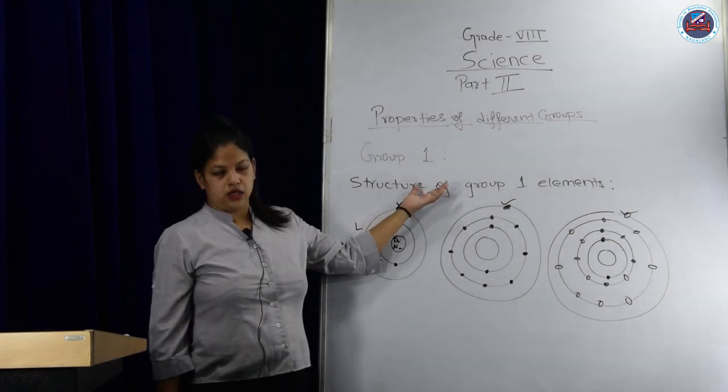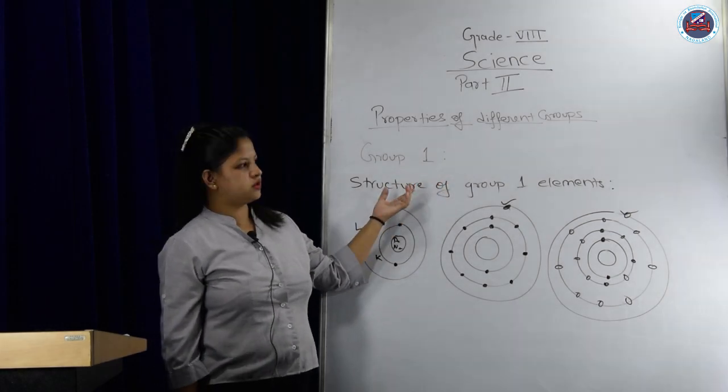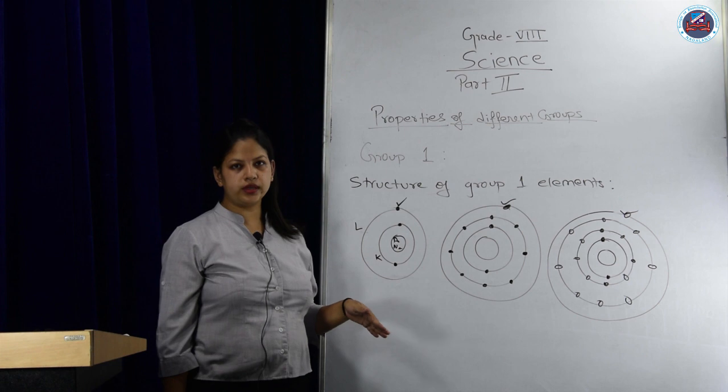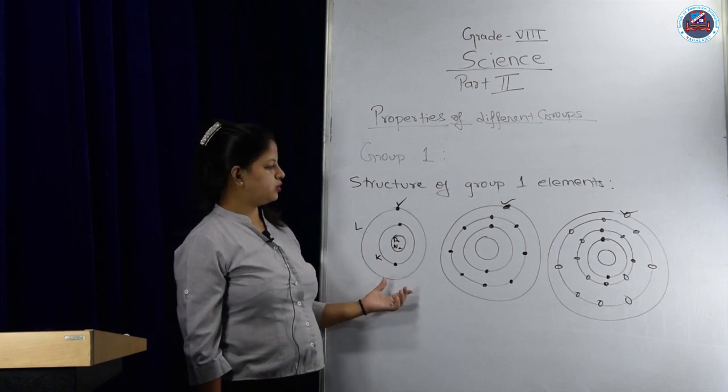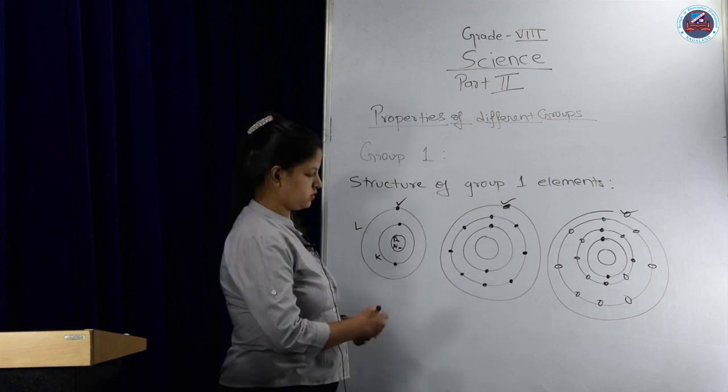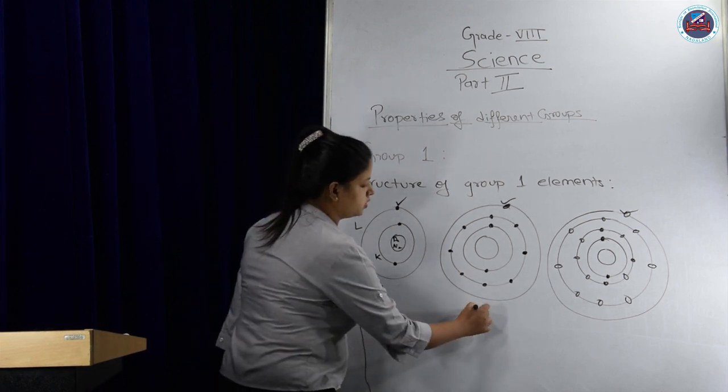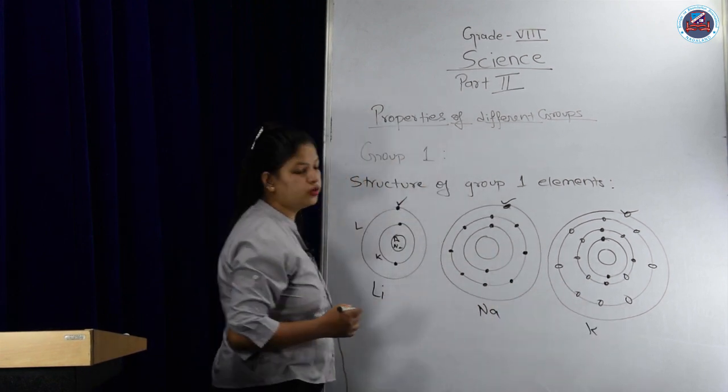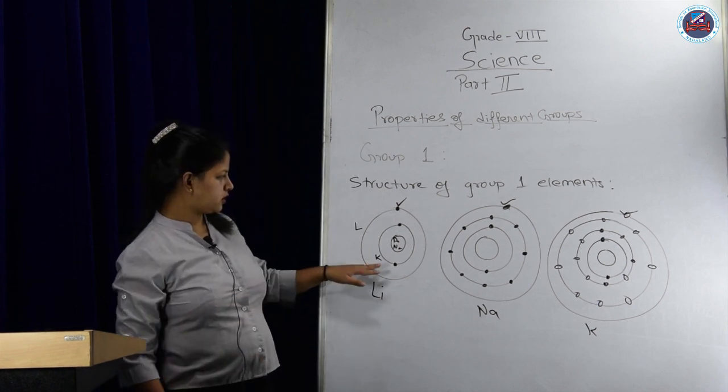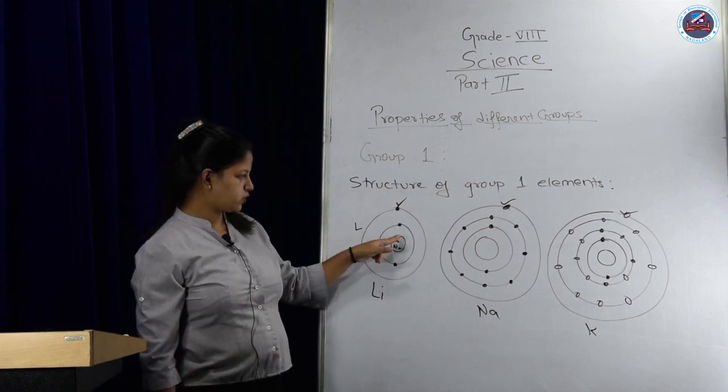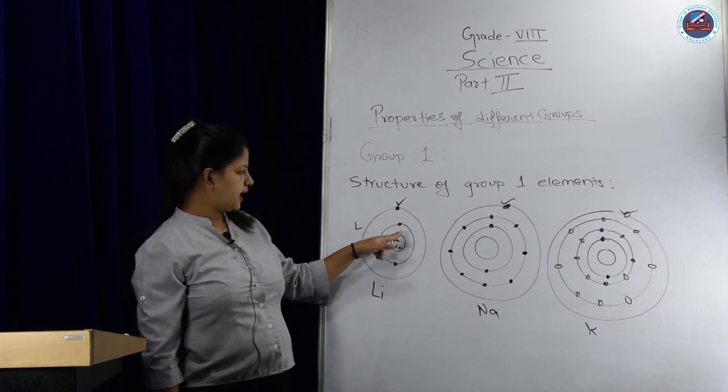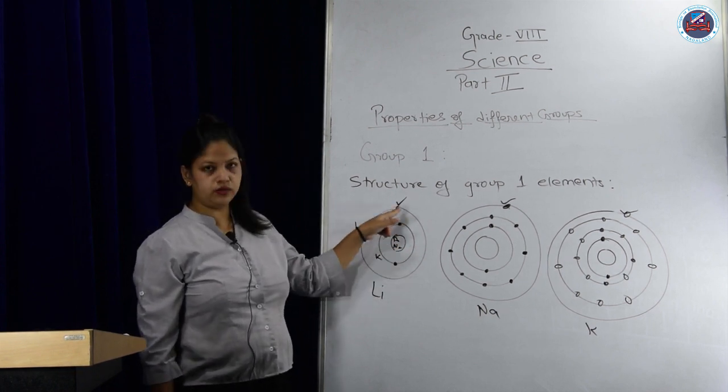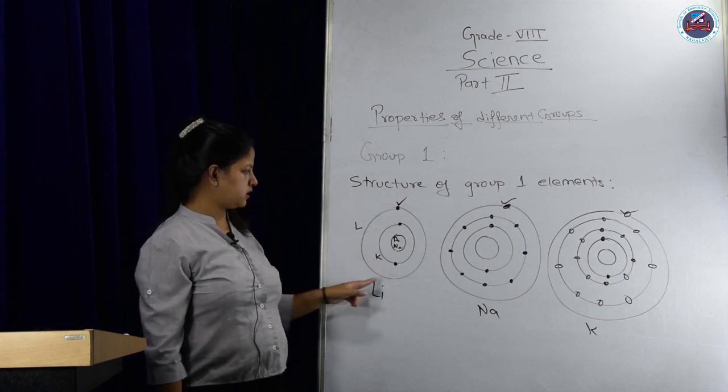Now we will be comparing the atomic structures of group 1 elements. This is for lithium, sodium, and potassium. This is the nucleus where protons and neutrons remain. This is the first shell we call K, this is the second shell L.